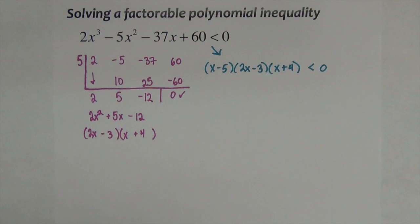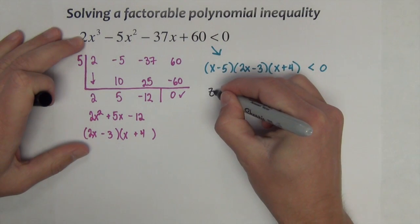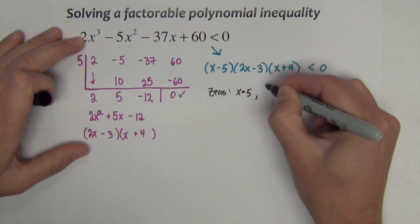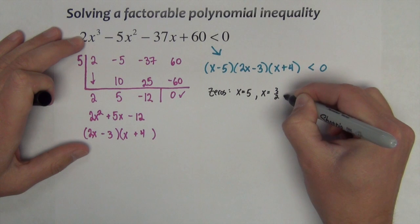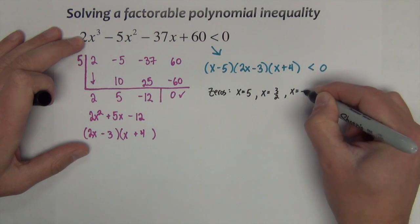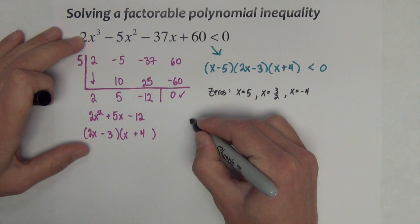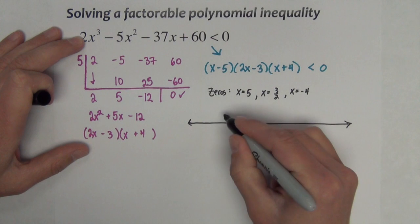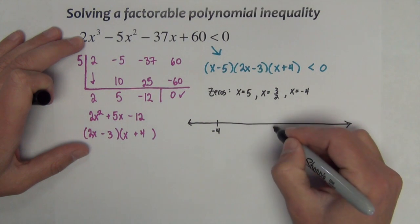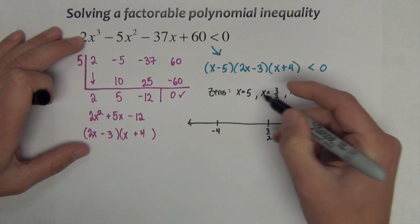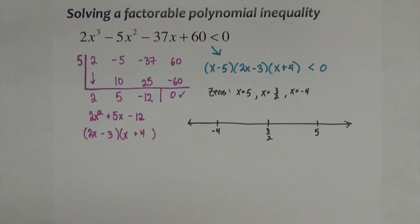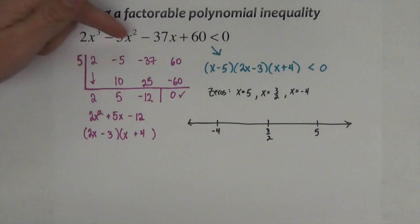We're going to solve this problem in the factored form versus the way it was originally presented. What do we need now? Well, I'm going to find all the zeros. This one gives me x = 5, this one gives me x = 3/2, and the last one gives me x = -4. We're going to use those zeros on a number line. -4 is farthest to the left, 3/2 in the middle, and 5 farthest to the right. We want to know where on this number line these points satisfy this inequality.